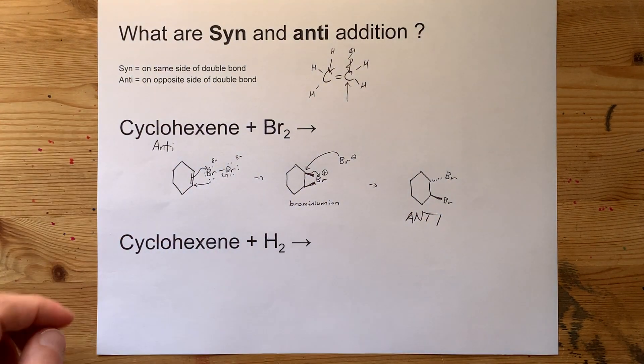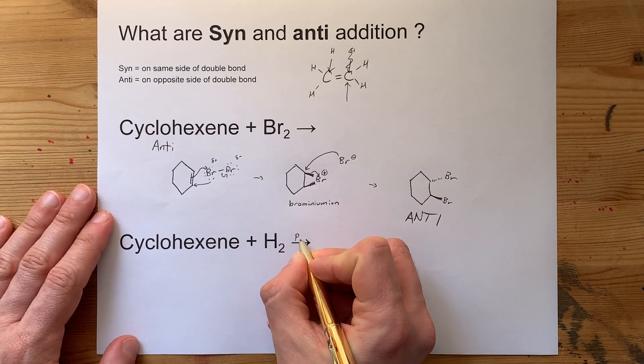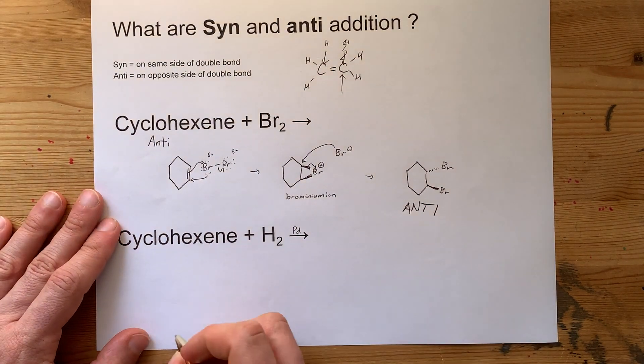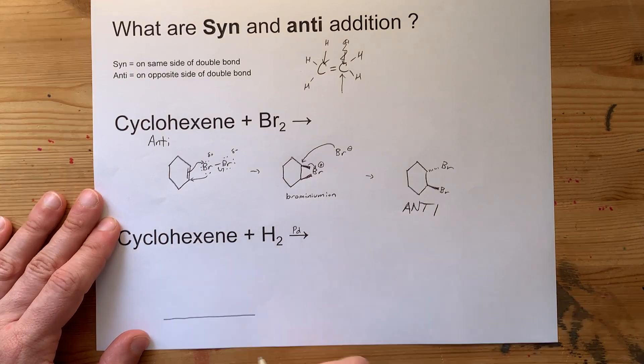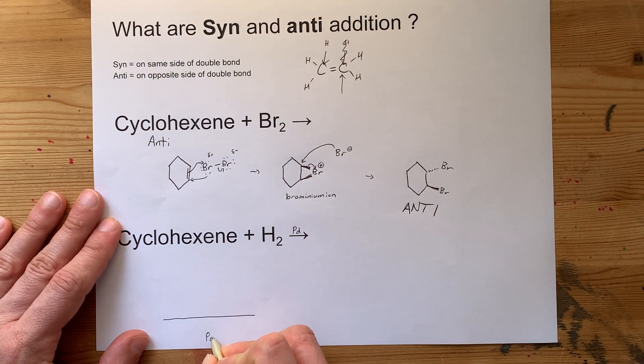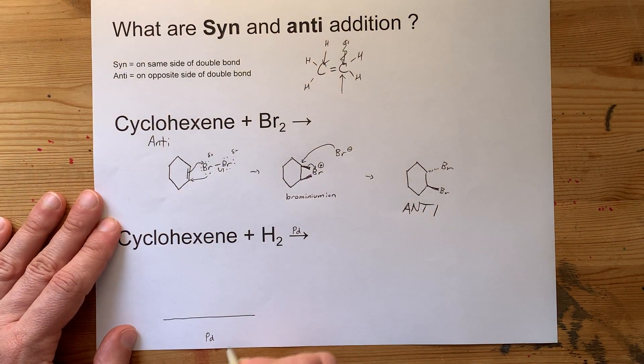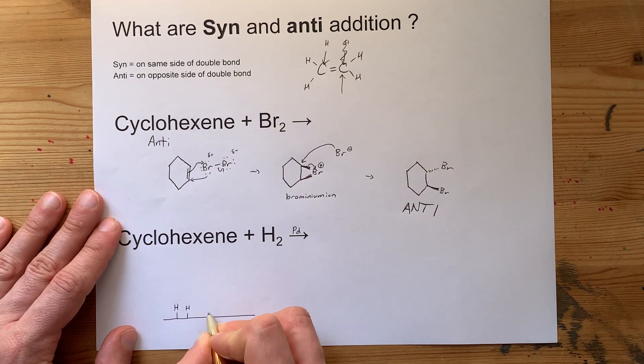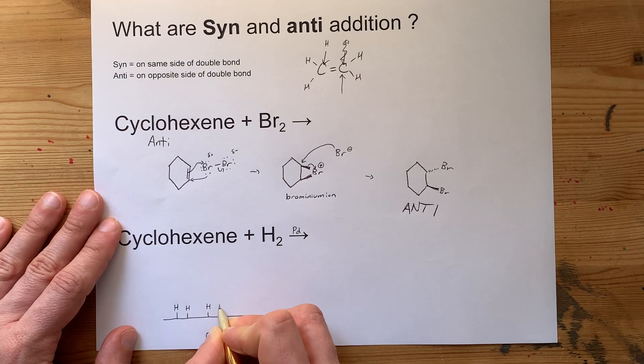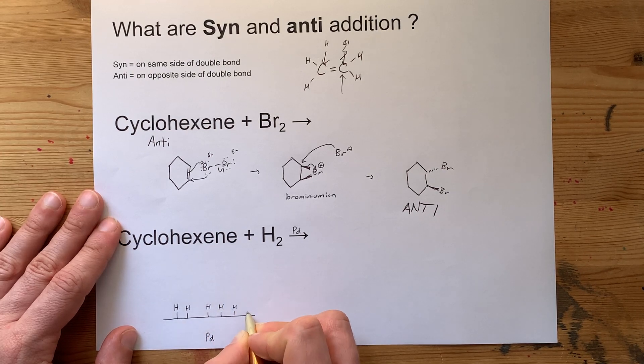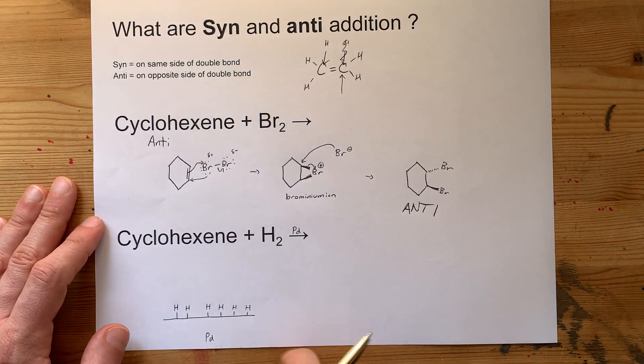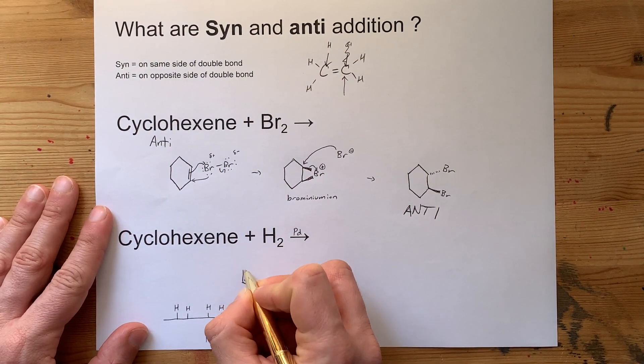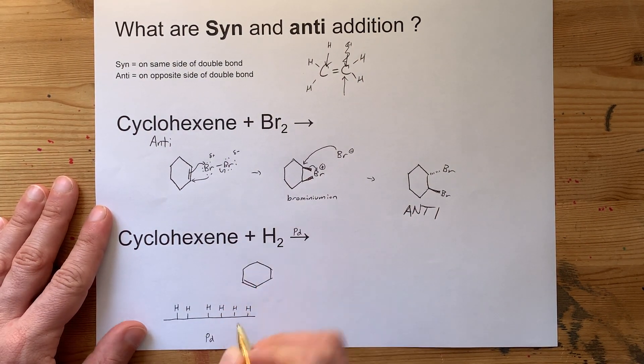An example of syn-addition is when you use palladium or platinum to catalyze hydrogenation of a double bond. The reason this works is that if you have a palladium or platinum catalyst, the H2 molecules break apart into atoms that are single bonded to that catalyst. So if a new molecule comes along, like a cyclohexene, sure, you could pop an H off and attach it here.